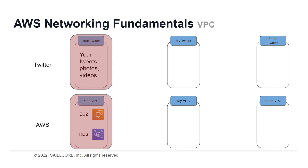Here's a more visual representation of how a VPC works. Think of your own Twitter account — you have your own tweets, photos, and videos, and only you control who can see them. You can't control what's on my Twitter or anyone else's. The same applies to your VPC in the AWS cloud: you have your own EC2, RDS, and other resources, and you control those resources fully, but you cannot control what is in someone else's VPC. It's your own private space.